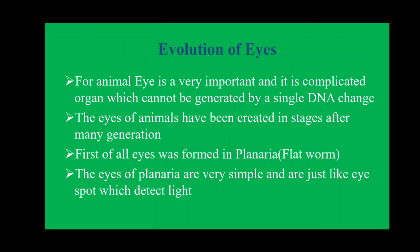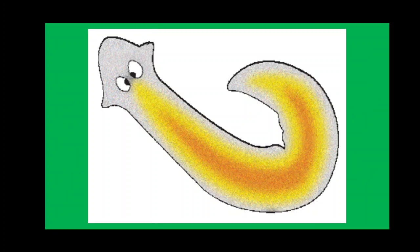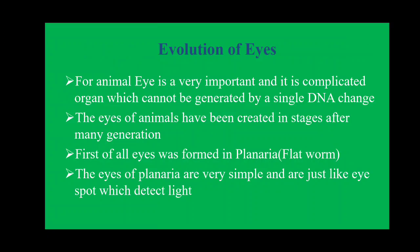For animals, the eye is a very important and complicated organ which cannot be generated by a single DNA change. The eye of animals has been created in stages, after many generations. From one DNA mutation it will not happen — it will take more time, more DNA changes, and after that the eye will be formed. The first eye was formed in the planaria, which is a flatworm, and the eye of that flatworm is a very simple structure.